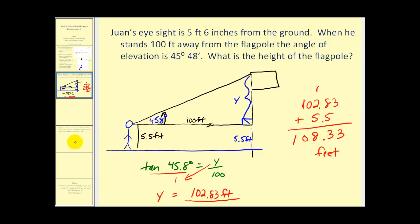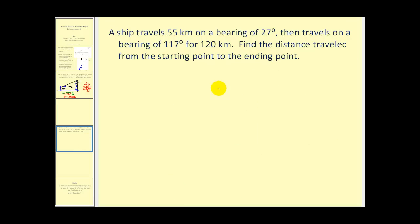Let's go ahead and take a look at one more problem. A ship travels 55 kilometers on a bearing of 27 degrees, then travels on a bearing of 117 degrees for 120 kilometers. Find the distance traveled from the starting point to the ending point.